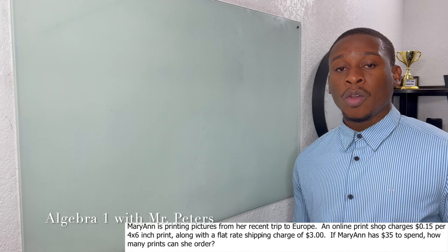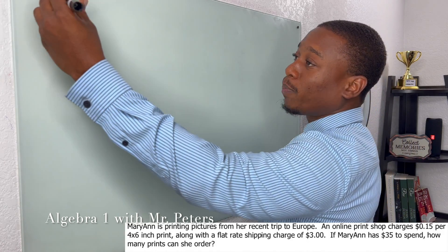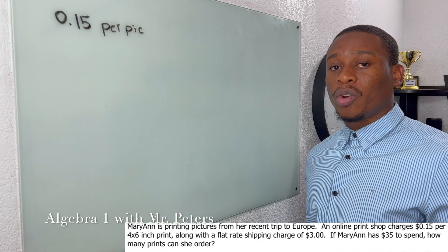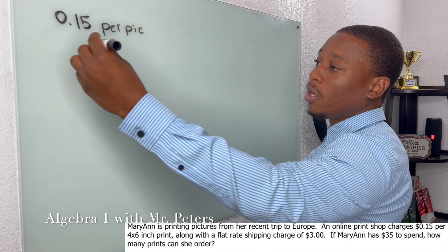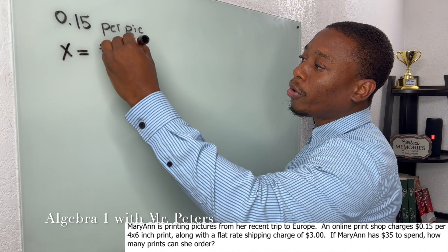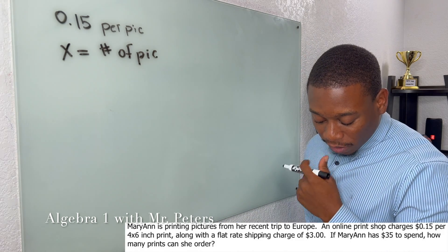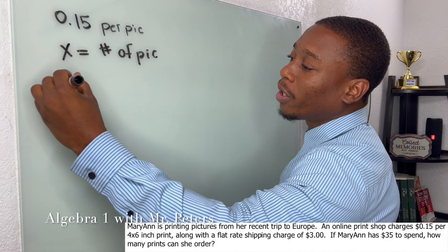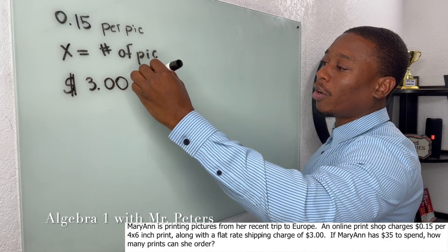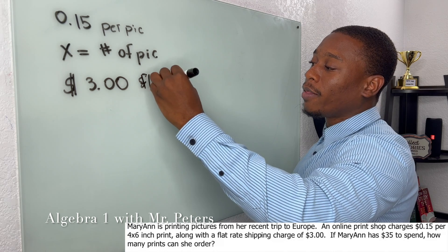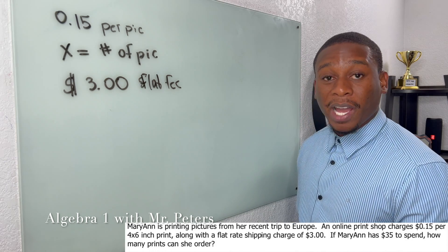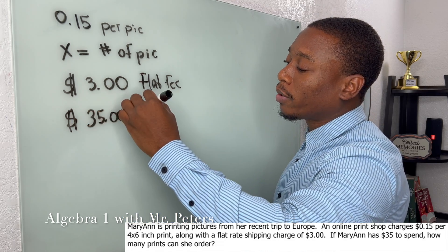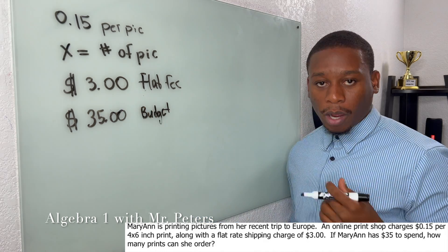In our first problem, after we read it, we have to write down some important information. We know that we spend 15 cents per picture, but we don't know the amount of pictures we're going to buy — that's what the problem is asking us. So our variable x is going to be the number of pictures. There are two other pieces of information: we have a flat fee shipping rate of three dollars, and we know that we only have 35 dollars to spend.